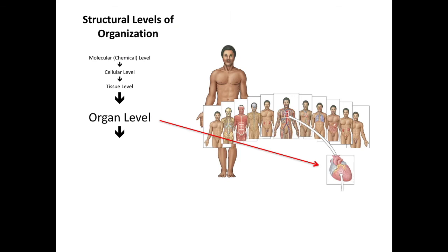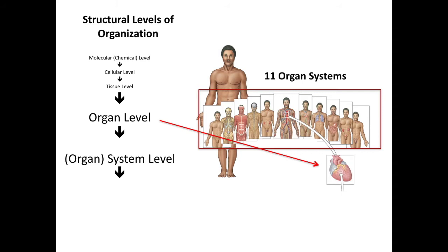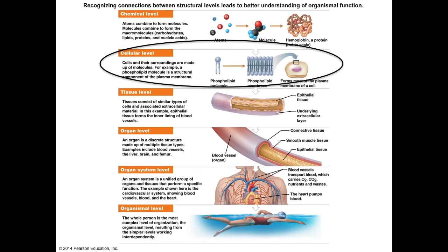Individual organs work together to perform a specific need of the body — this is referred to as an organ system. We're going to be studying 11 organ systems that work together and make up the organism. If you remember the example of a car: it was made of systems — the drivetrain, the cooling system, the steering system — all geared toward keeping the car running and providing ease and comfort for the driver and passenger. Those systems are composed of several parts, and the parts were made out of a particular material — metal, glass, rubber — appropriate for its function.